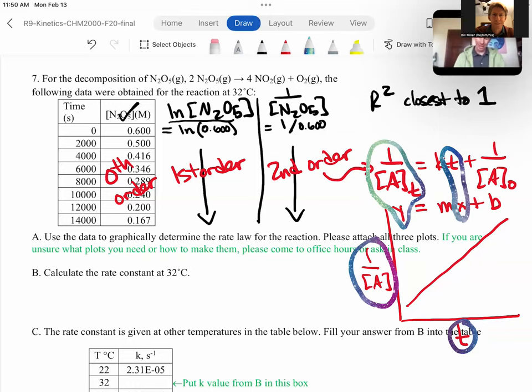And second off, M is our slope. So because M is the slope in Y equals MX plus B, and since the corresponding part is K, that means that slope equals K, our rate constant.